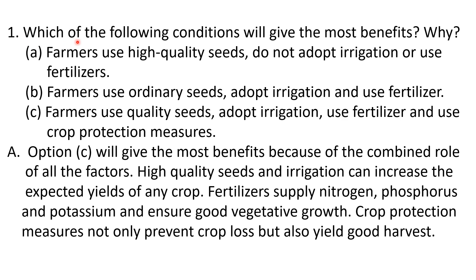Question number one: which of the following conditions will give the most benefits? Three combinations of conditions are given and we need to identify the most beneficial one. Option A: farmers use high quality seeds but do not adopt irrigation and do not use fertilizer — they use only high quality seeds.